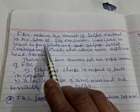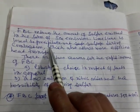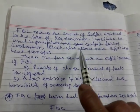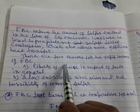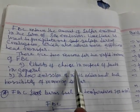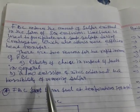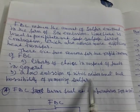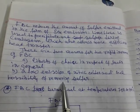FBC reduces the amount of sulfur emitted in the form of SOx emissions. Limestone is used to precipitate out sulfate during combustion, which also allows more efficient heat transfer. There are two reasons for the rapid increase of FBC: first, liberty of choice in respect of fuel; second, low emission of nitric oxide and the possibility of removing sulfur.